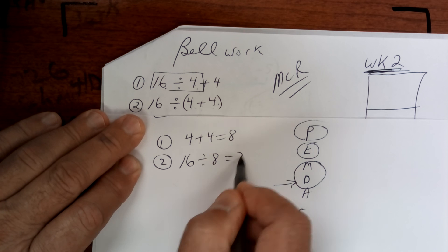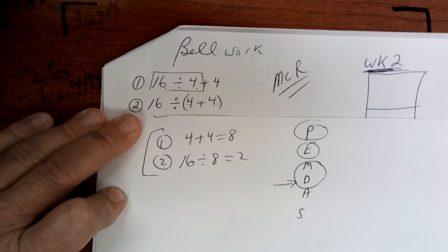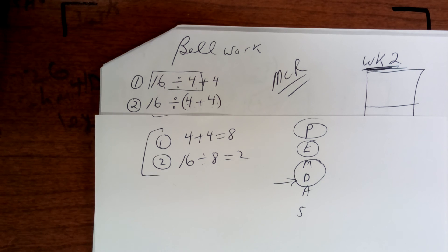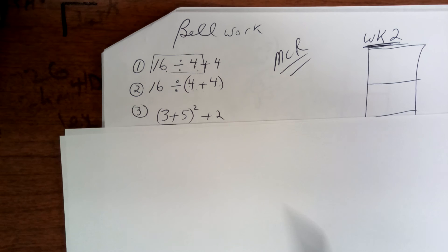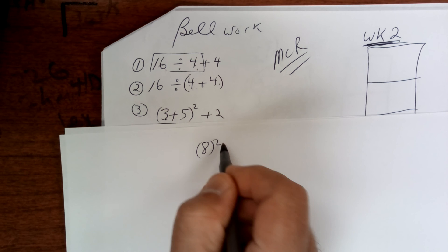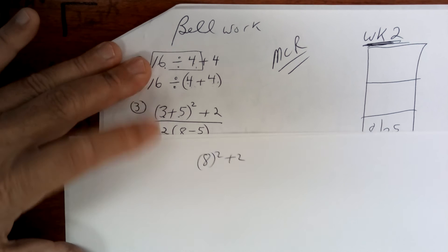So for number 2 it's going to be 16 divided by 8 equals 2. Make sure you understand the difference. Okay, let's go on. This one right here, I'm going to do parentheses first. So that's going to be 8 squared plus 2, and then down on the bottom I'm going to do parentheses and get 8 minus 5.